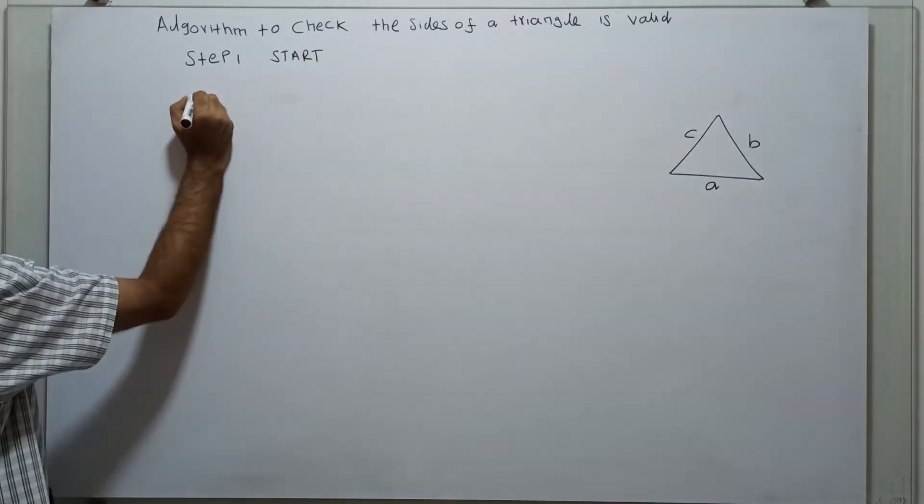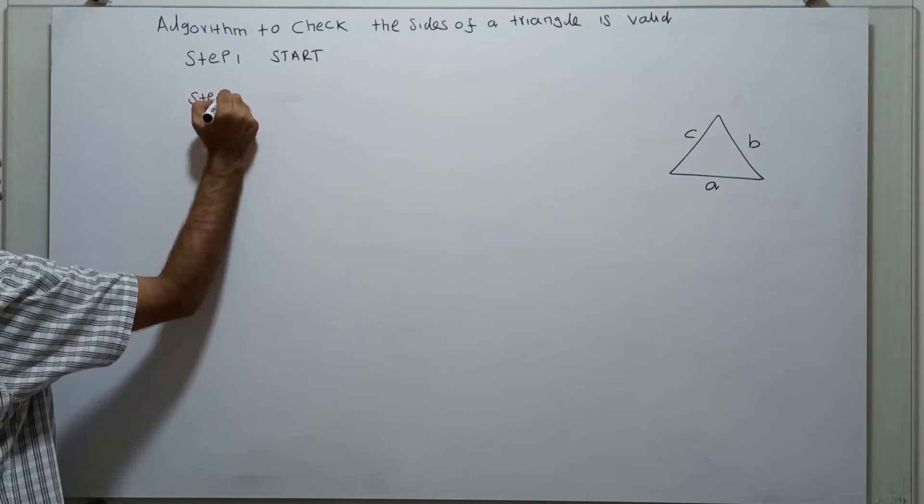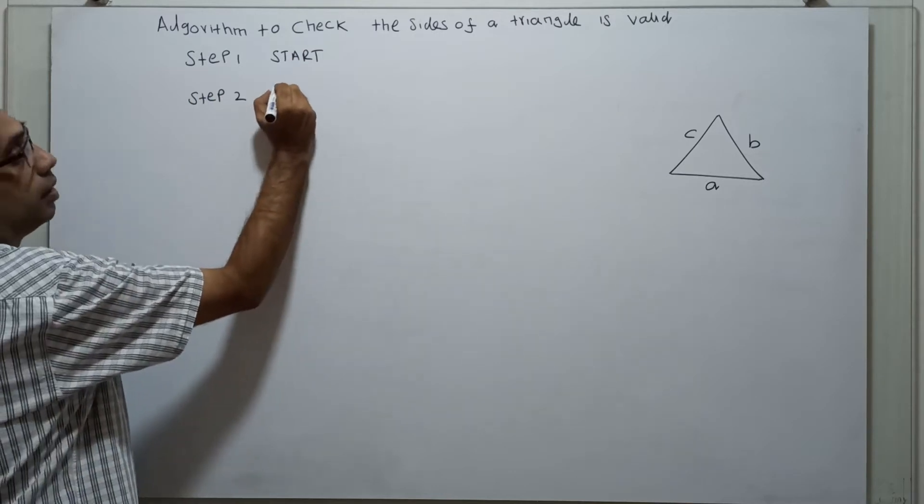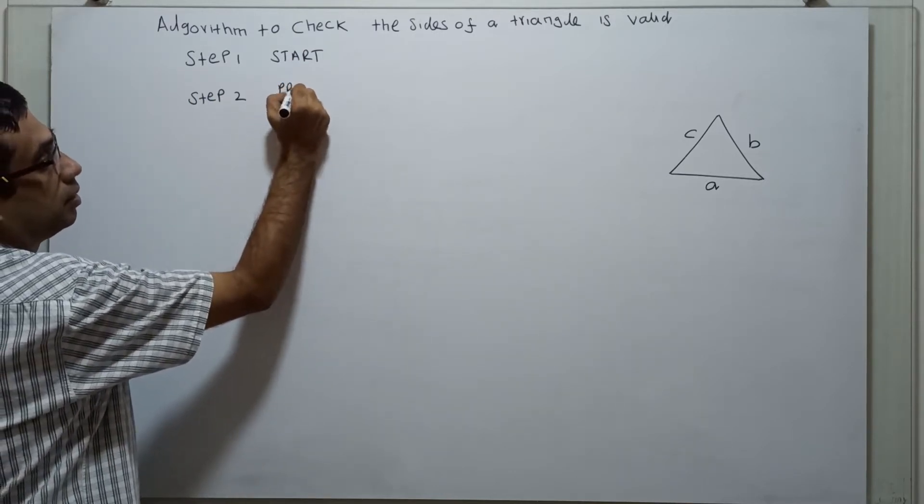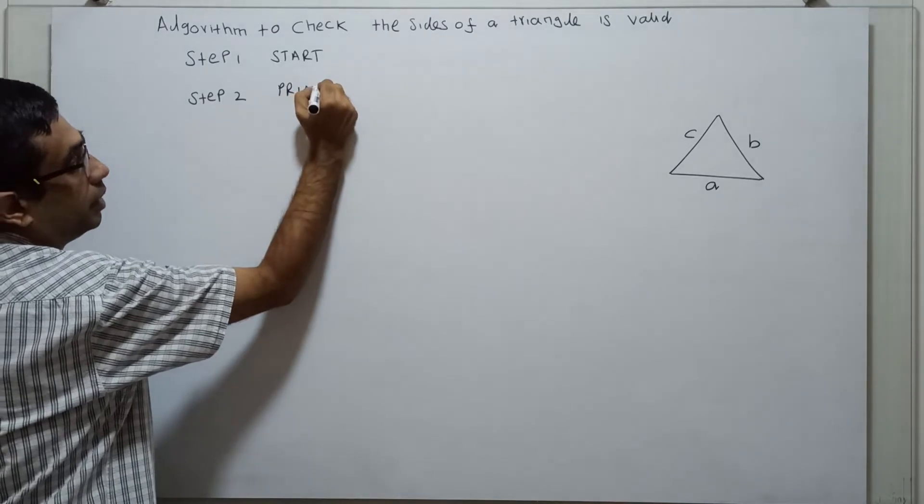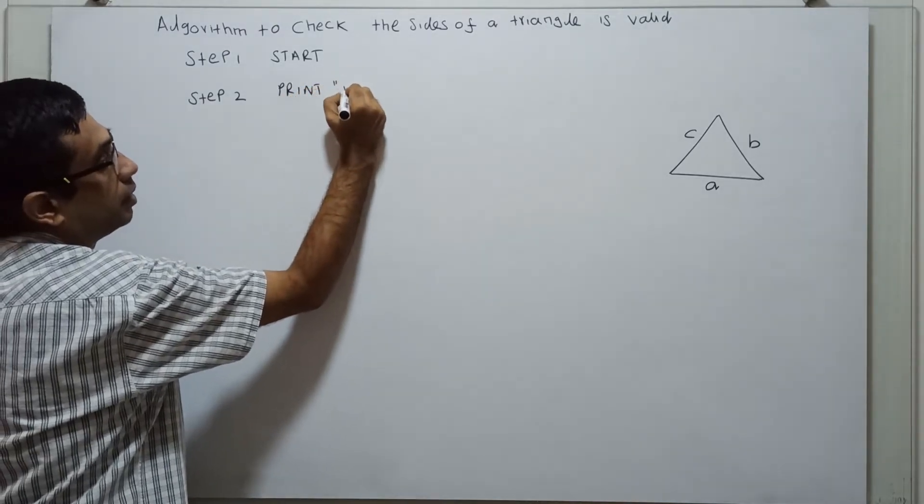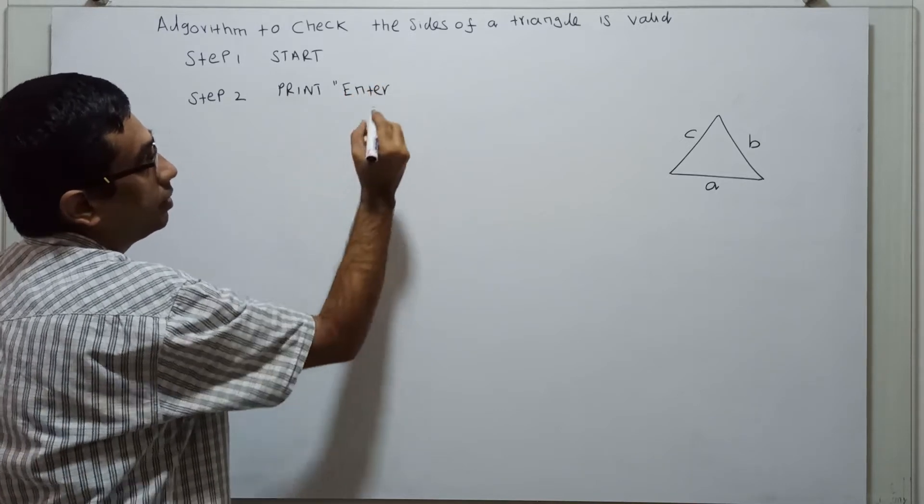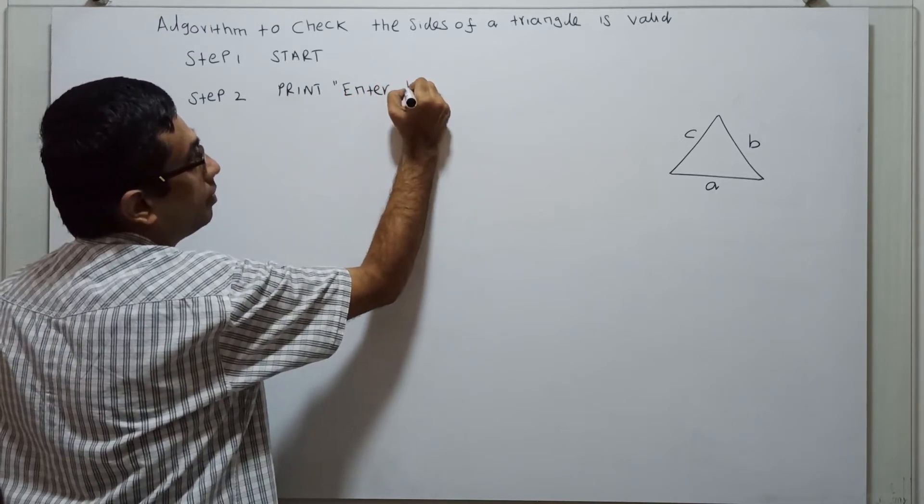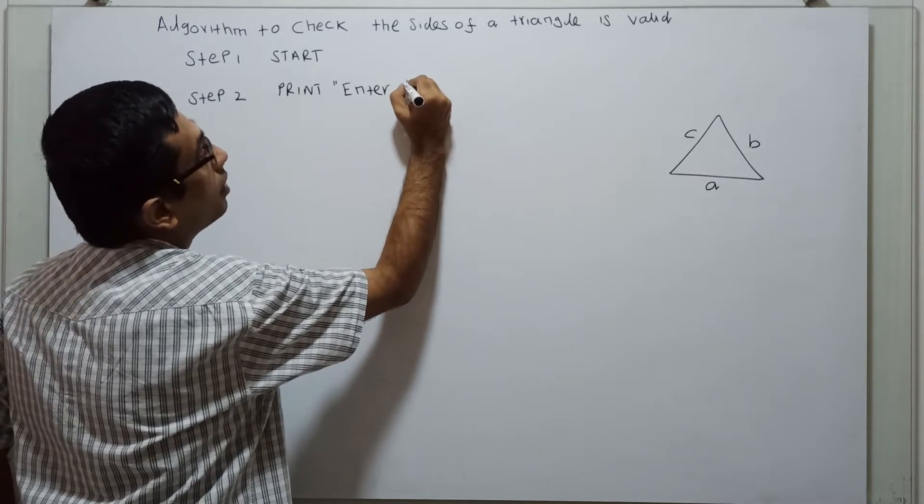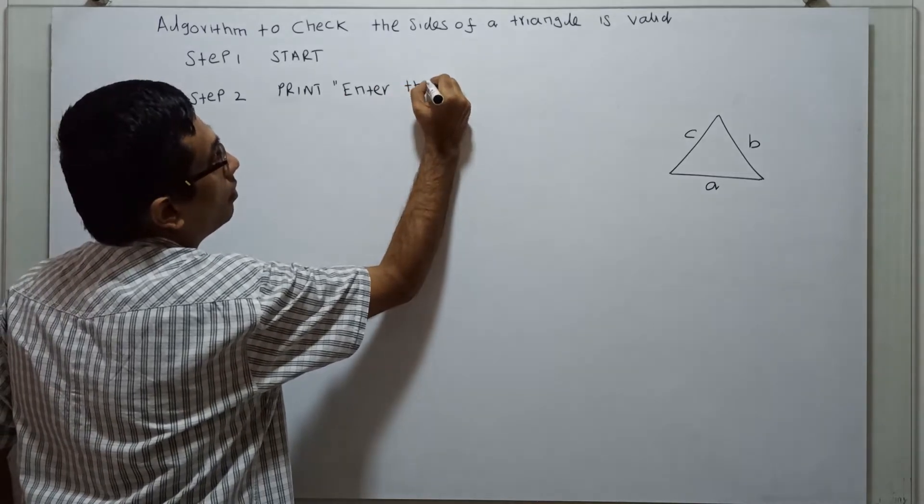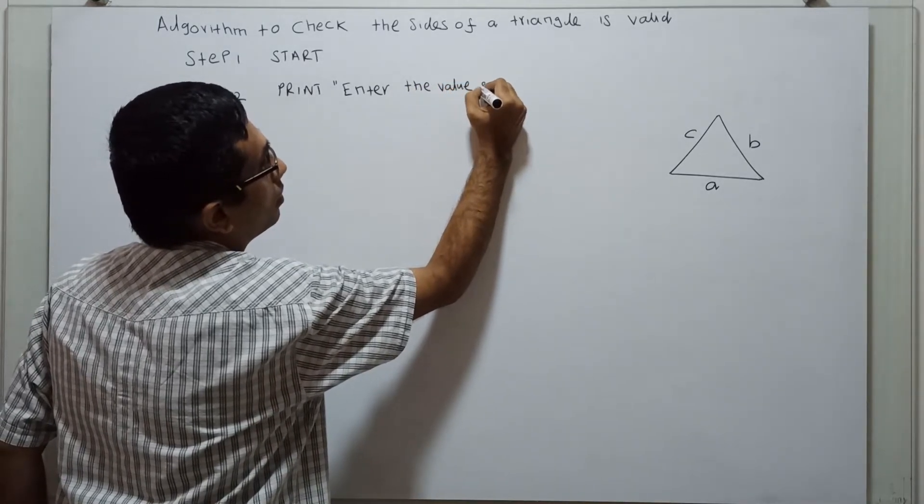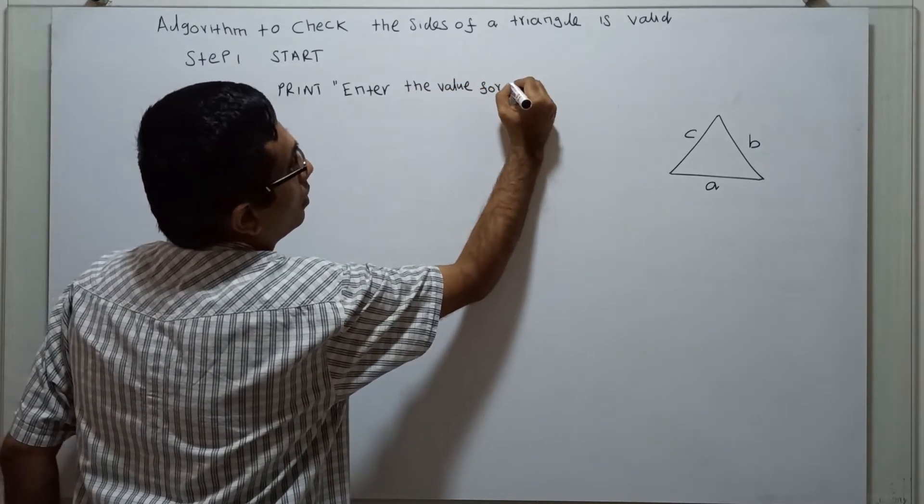Step 2. Ask the user to enter the three sides. Print enter the value for three sides.